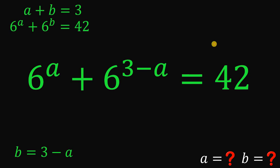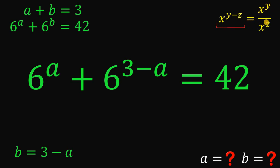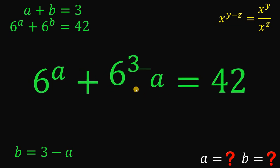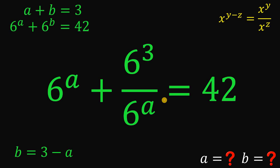At this point, let's use some laws of exponents. If we have x raised to the power of Y minus Z, this equals x raised to the power of Y over x raised to the power of Z. So 6 raised to the power of 3 minus A can be written as 6 raised to the power of 3 over 6 raised to the power of A.